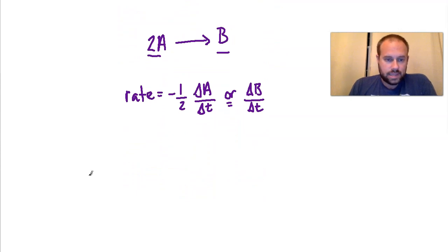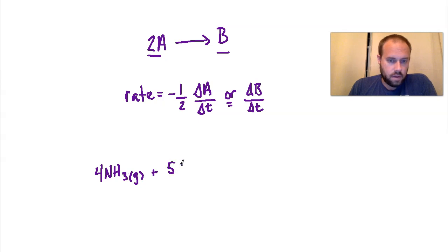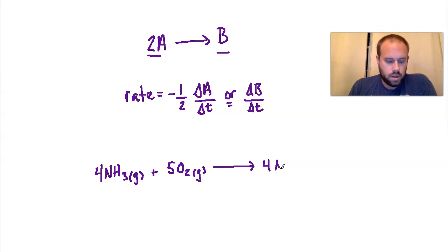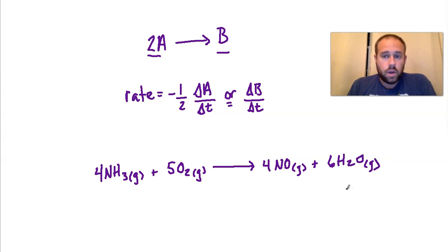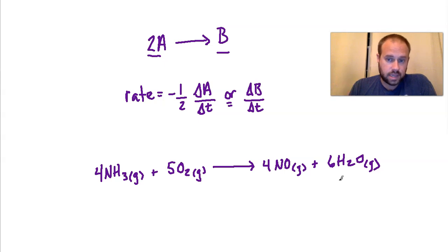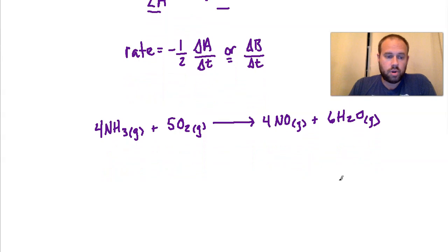Let's take a more complex example. Pause the video and attempt to express the rate law relative to every reactant and every product. The reaction is: 4 NH₃ gas plus 5 O₂ gas yields 4 NO gas plus 6 H₂O gas. Try to express the rate in four different ways — relative to ammonia, molecular oxygen, nitric oxide, and water vapor — then come back and check your work.